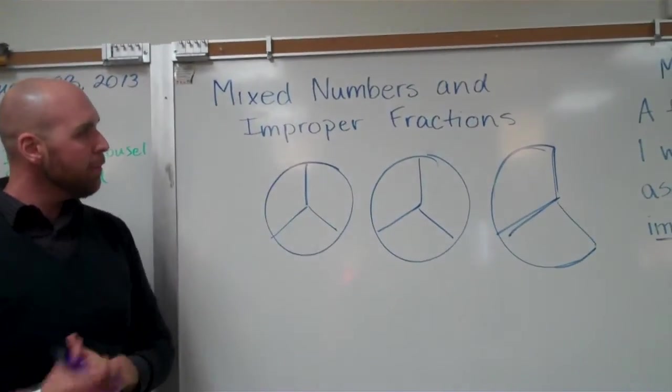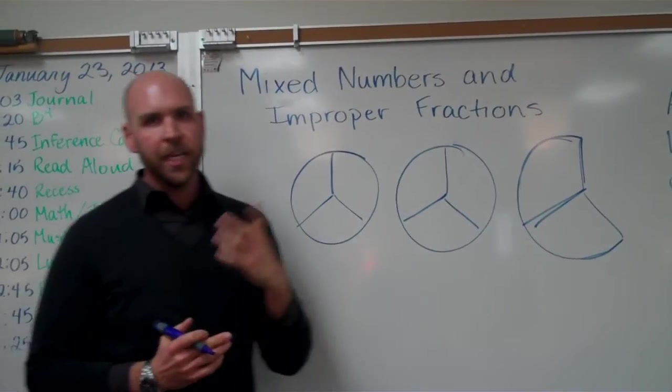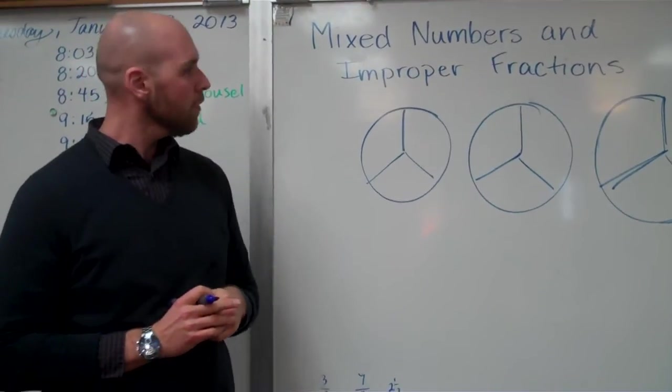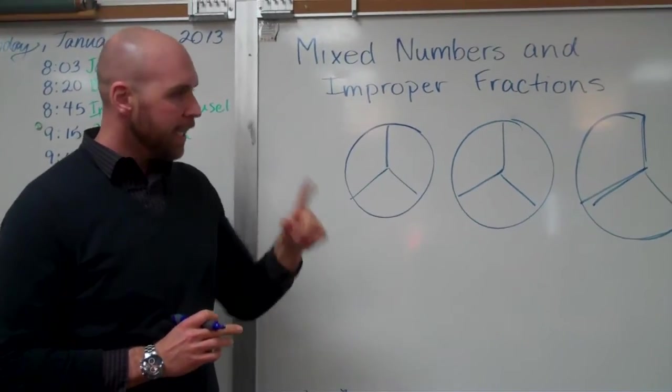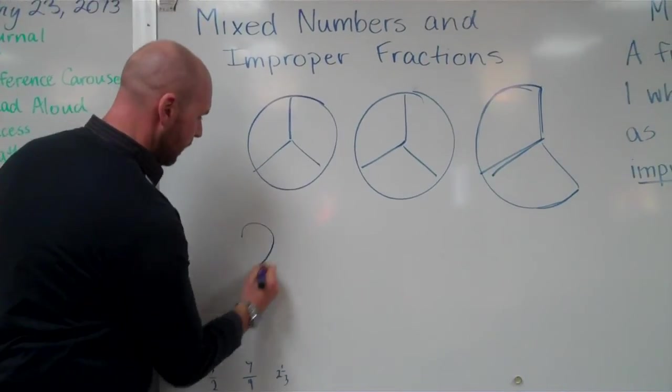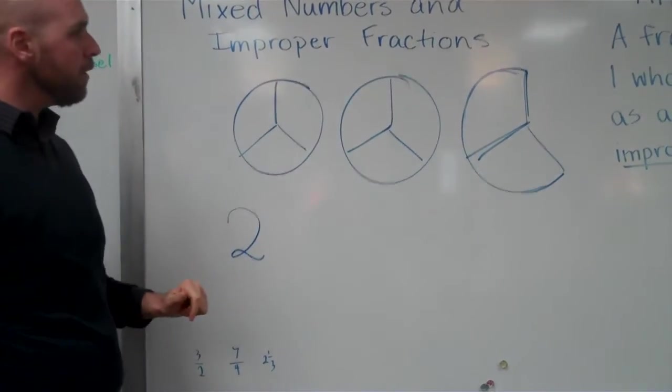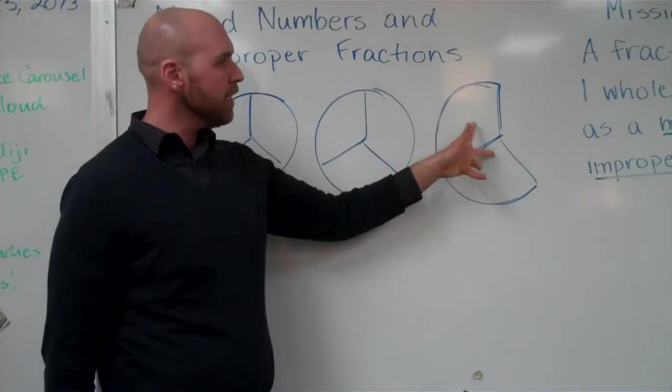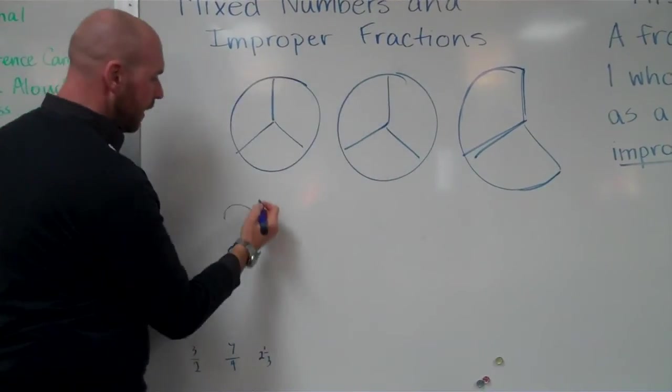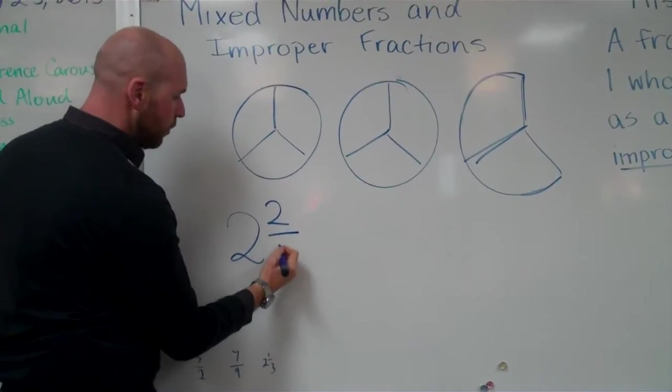Now first, a mixed number is going to look like what? Take a second, think about it, write it down. Alright. If you're having trouble, think about this. You've got two wholes. So there's my whole number. And now I'm going to put my fraction is two thirds. So my mixed number is two and two thirds.